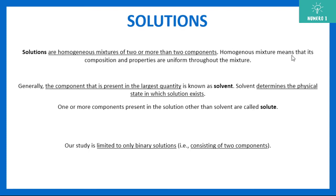Homogeneous mixture means that the composition and the properties are uniform throughout the mixture. The component which is present in the largest quantity is known as the solvent, and the solvent is the one which determines the physical state in which the solution exists. One or more components present in lesser quantity are known as solute.